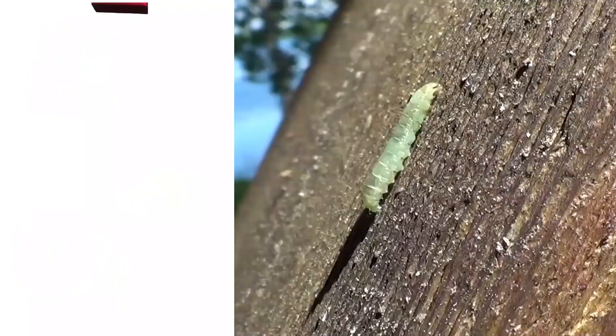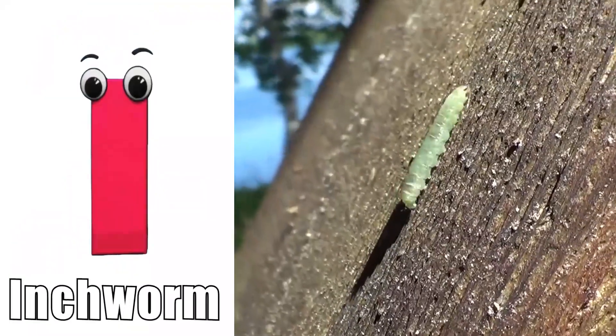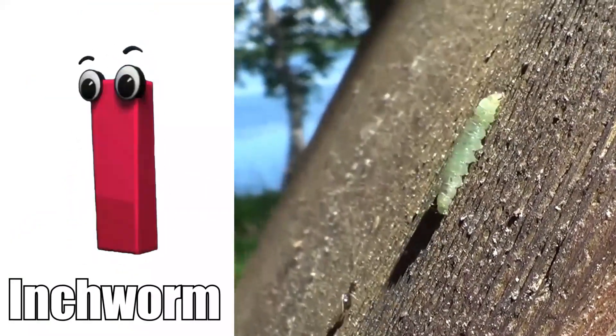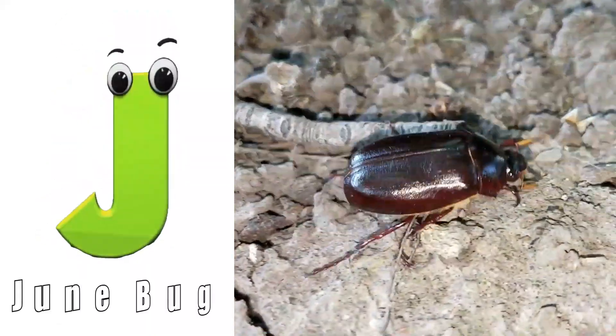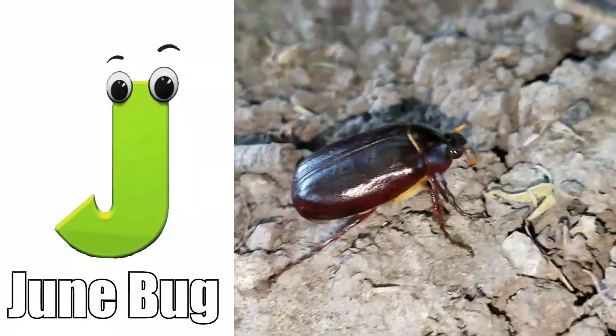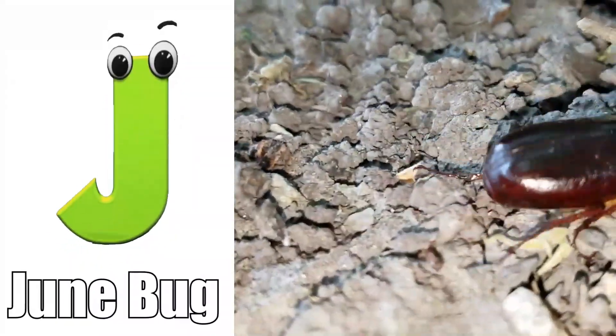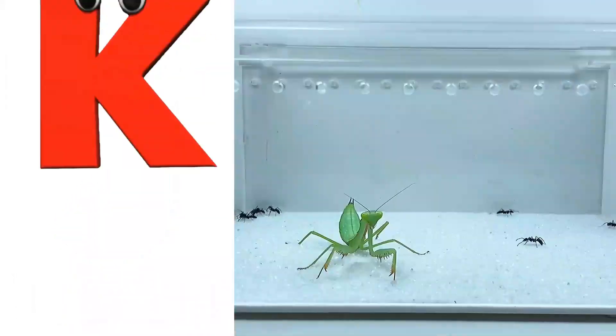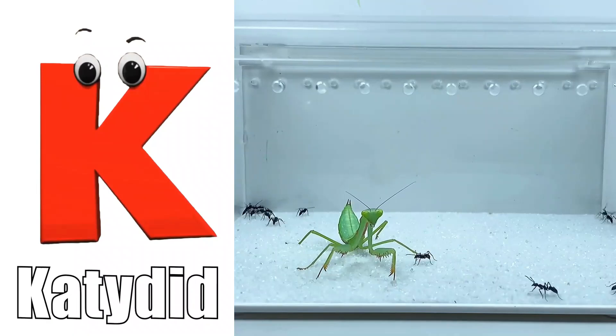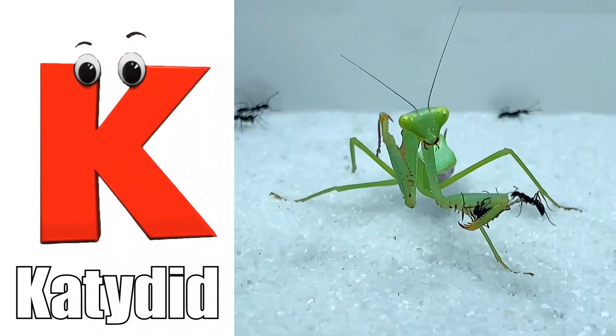I is for inchworm. I. Inchworm. J is for junebug. J. Junebug.